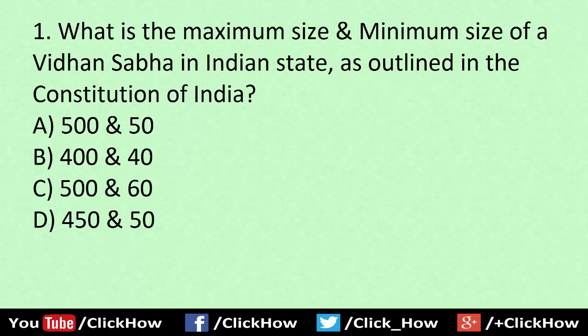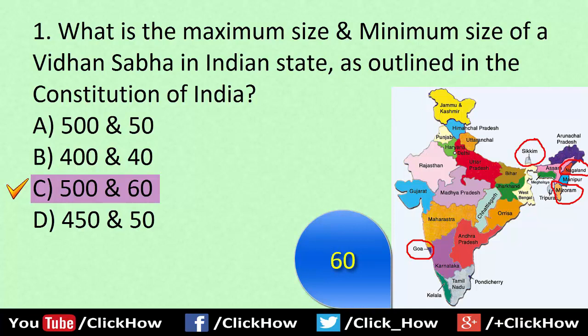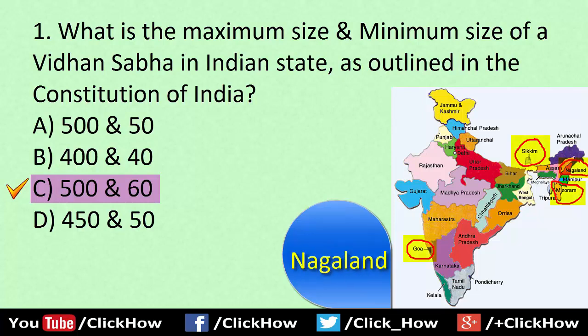What is the Maximum Size and Minimum Size of Vidhan Sabha in an Indian State as outlined in the Constitution of India? Answer is C, 560. The Constitution of India states that the maximum number can be 500 and it cannot be less than 60. But there are some exceptional states which have less than 60 members, like Sikkim, Goa, Mizoram and Nagaland.